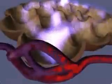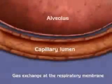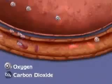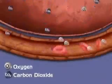Now let's zoom into a higher magnification view of gas exchange at the respiratory membrane. Red blood cells in the capillary adjacent to the alveolus release carbon dioxide and bind oxygen.